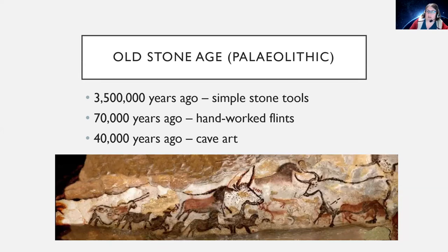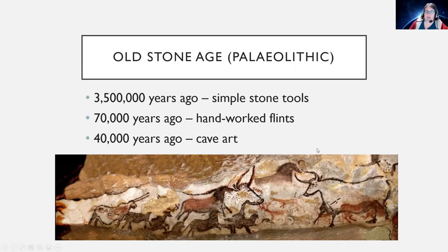The Old Stone Age, the Paleolithic, was from three and a half million years ago up until 40,000 years ago. It takes in the earliest production of simple stone tools, and at this point we're talking about Homo habilis and Homo erectus rather than Homo sapiens — the forerunners of modern humans. Around 70,000 years ago people started to handwork flints, and around 40,000 years ago we get the beginning of cave art.